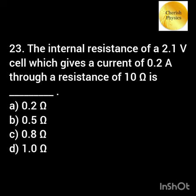The internal resistance of a 2.1 volt cell which gives a current of 0.2 ampere through a resistance of 10 ohm is?